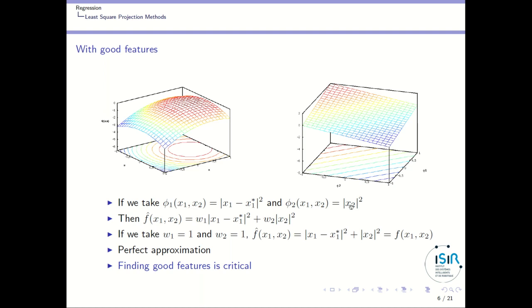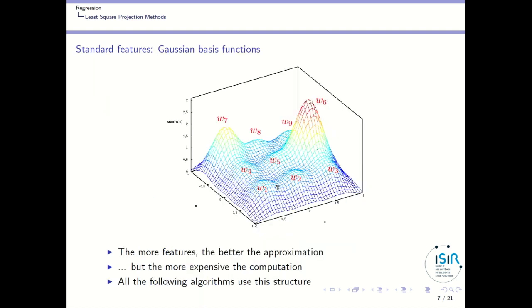In general, you don't know what the perfect features are, so you take something general purpose. What we take in general are Gaussian functions, and you pave the input space with Gaussian functions. The more Gaussian functions — feature functions or basis functions — you take, the better the approximation will be. You tune the weights so that those basis functions multiplied by weights approximate the function you are looking for.